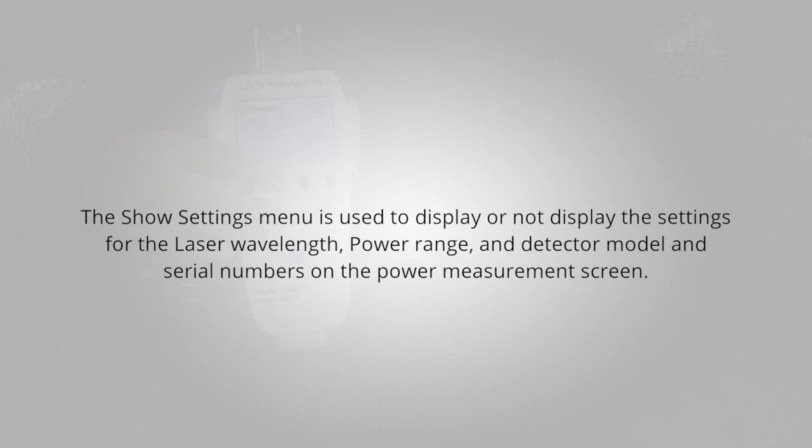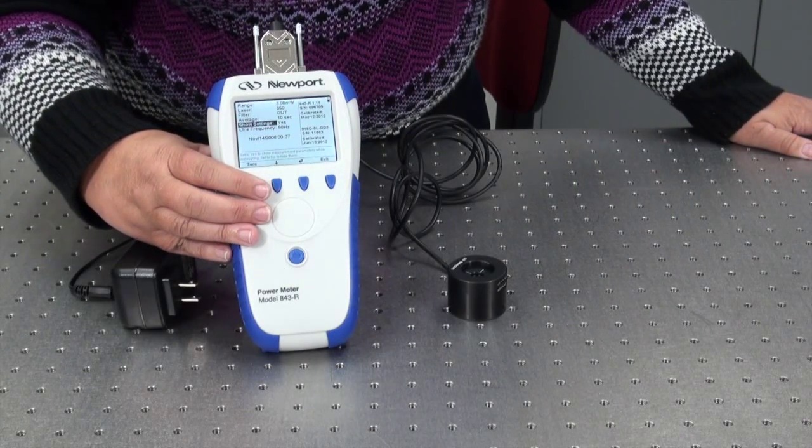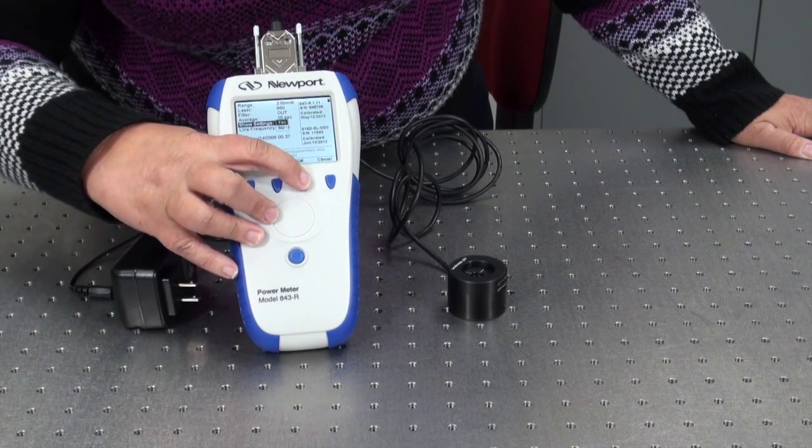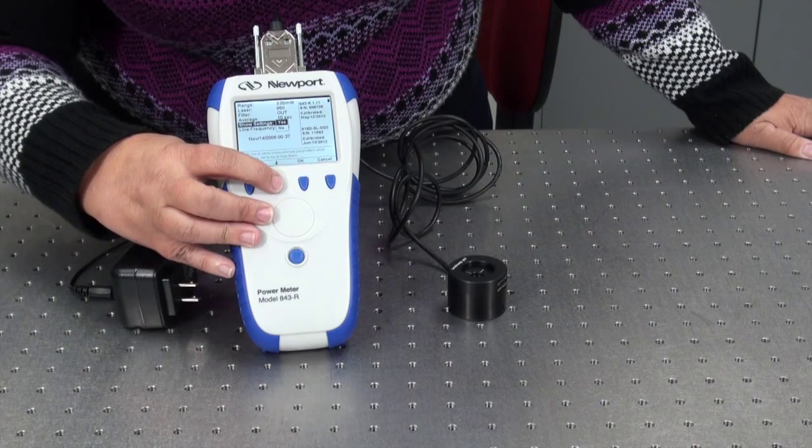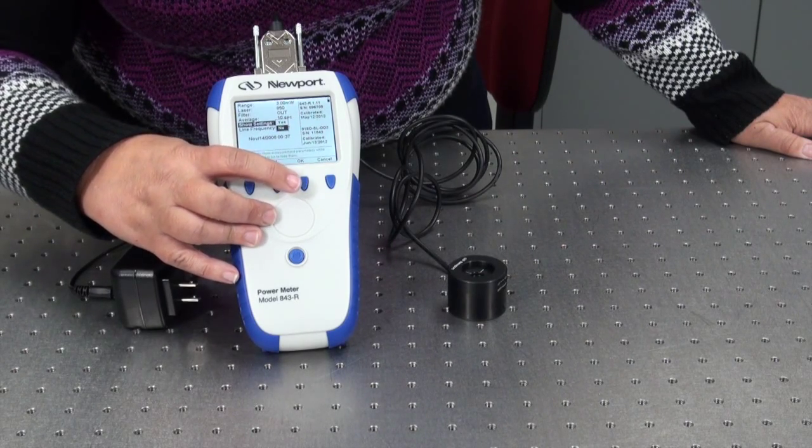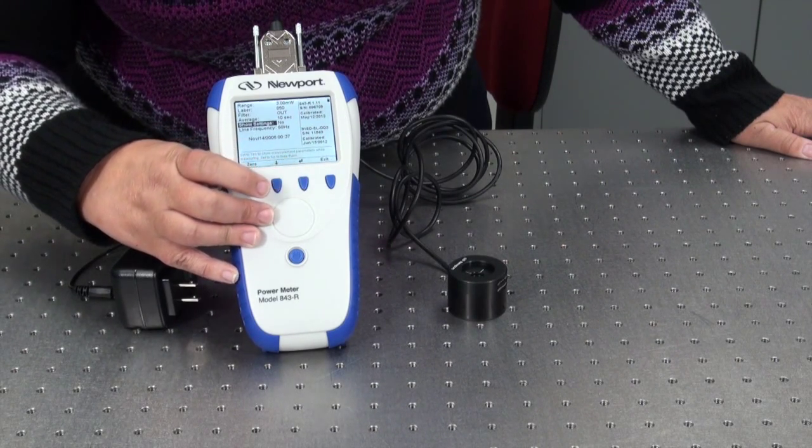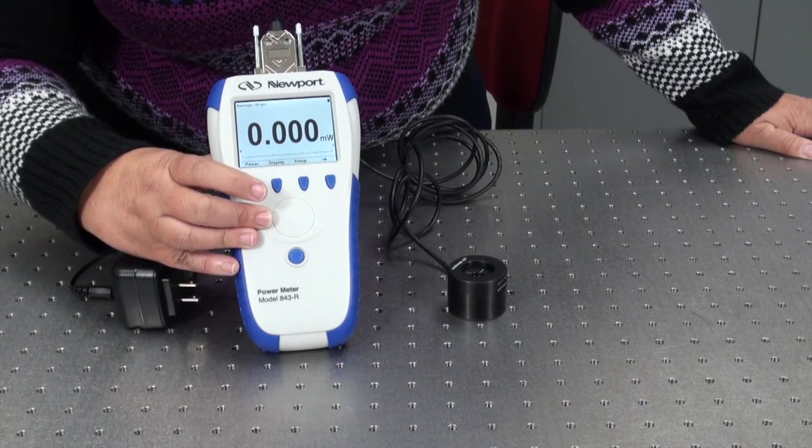The show settings menu is used to display or not display the settings for the laser wavelength, power range and detector model and serial numbers on the power measurement screen. Choosing a setting of yes will display these settings. Choosing a setting of no will not display these settings and will show a larger graph.